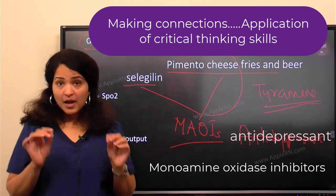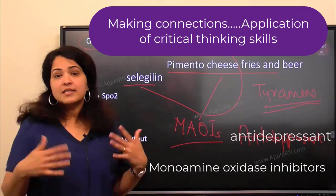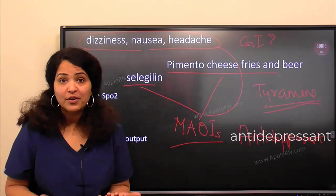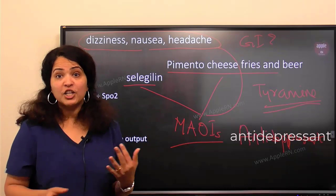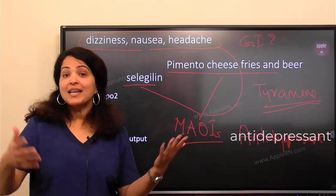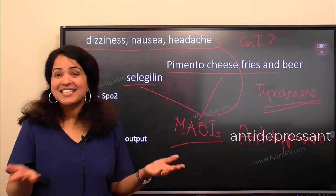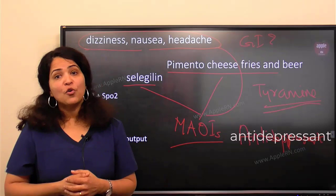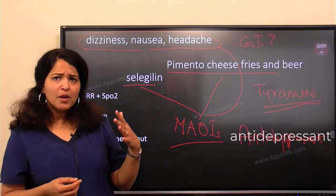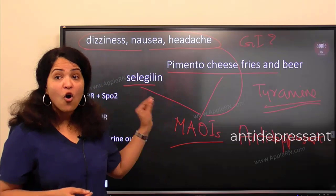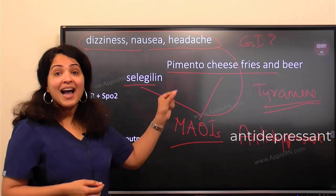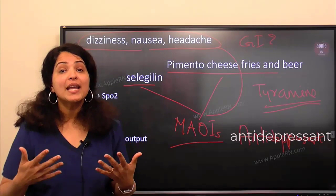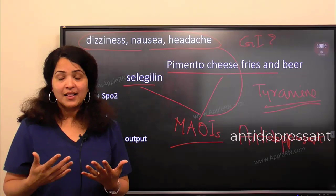So what is the problem with tyramine-rich food? Tyramine is an amino acid. In a regular person, we get it from food — it's in avocados, fish, pepperoni, salami, beer, wine, and all fermented things — and our body handles it fine. But what is the problem when someone is already on an MAOI and is also consuming tyramine?